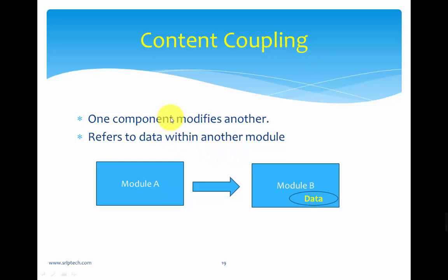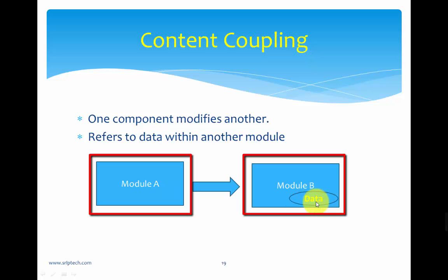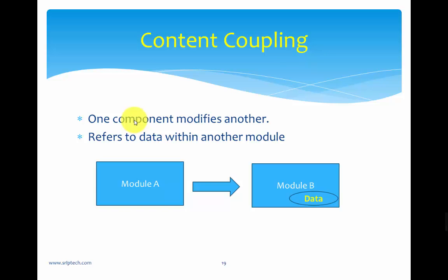Content coupling means one component directly modifies another. For example, module A refers to specific data inside module B — module A references the content of module B. This is a high coupling mechanism and should be avoided in quality design, as we need low coupling mechanisms.